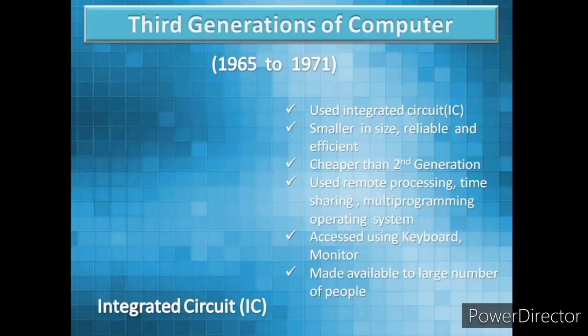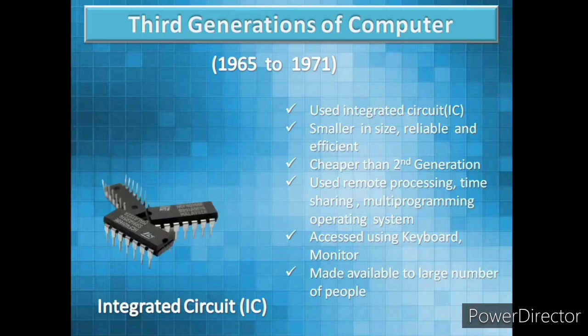The third generation of computers was between 1965 to 1971. Computers of the third generation used integrated circuits, which replaced transistors. This type of computer was smaller in size, reliable, and more efficient. In this generation, computers used remote processing, time sharing, and multi-programming operating systems.